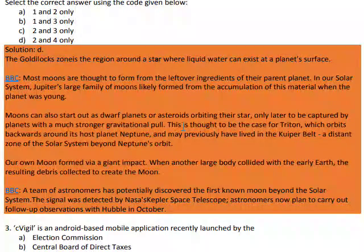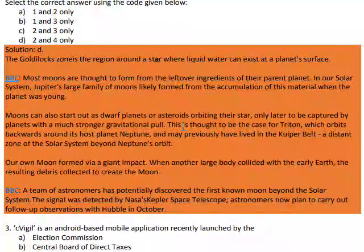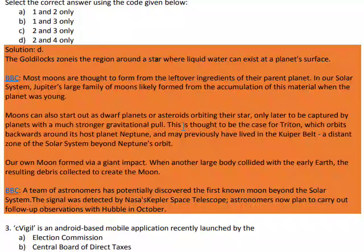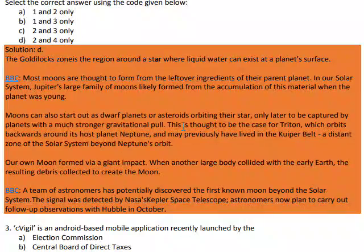A team of astronomers has potentially discovered the first known moon beyond the solar system. The signal was detected by NASA's Kepler Space Telescope, and astronomers plan to carry out follow-up observations with Hubble. So we have now discussed all the key points.